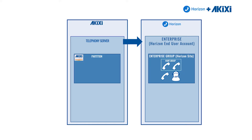This is also where a site connection fee is applied. For this example we're going to apply an Akixi 2000 site license to this partition. Once we've set the service level we can then look at connecting the partition.